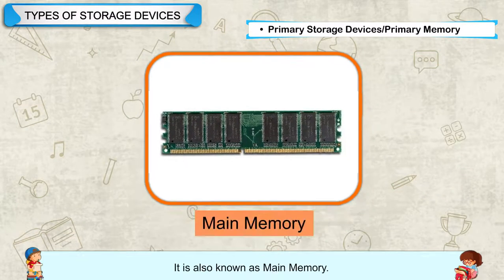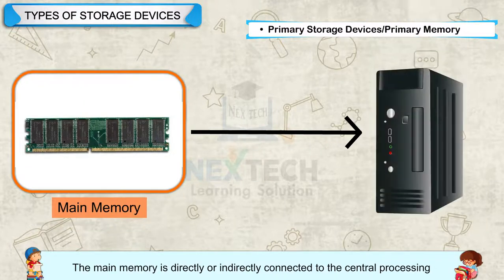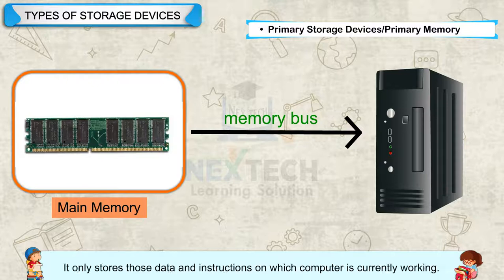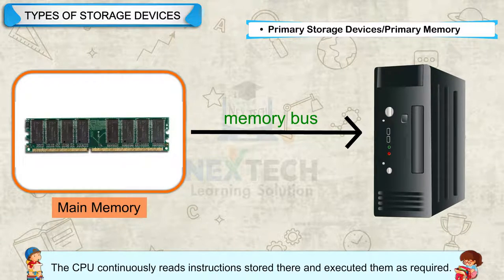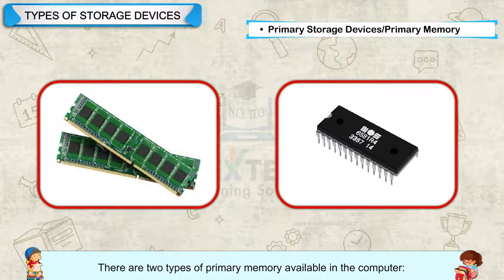Primary Storage Devices or Primary Memory: It is also known as Main Memory. The main memory is directly or indirectly connected to the central processing unit via a memory bus. It only stores those data and instructions on which the computer is currently working. The CPU continuously reads instructions stored there and executes them as required. There are two types of primary memory available in the computer.